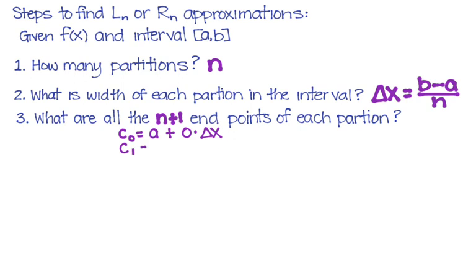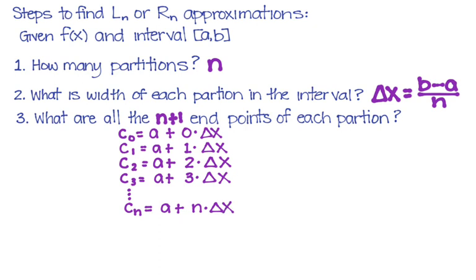To find your second endpoint, meaning endpoint C sub one, we're going to take A and we're going to add one change in X. When we want to find our third endpoint, which is C sub two, we're going to add two of our delta X's and so on and so forth. And you will have all of these until you get to what we say as C sub N, meaning whatever the N was.